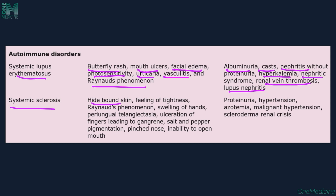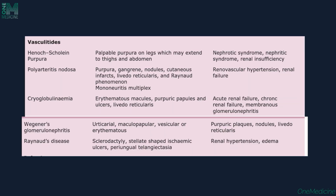In systemic sclerosis, the patient will have hide-bound skin, feeling of tightness, Raynaud's phenomenon, swelling of the hands and fingers, periungal telangiectasia, ulceration of the fingertips leading to gangrene, salt and pepper pigmentation, pinched nose, and inability to open mouth. Kidney manifestations include proteinuria, hypertension, azotemia, malignant hypertension, and scleroderma renal crisis.